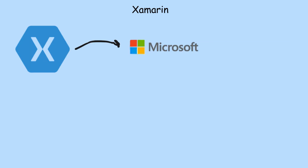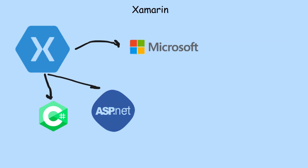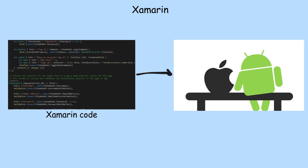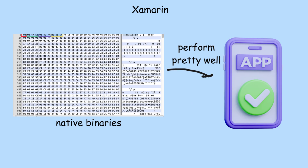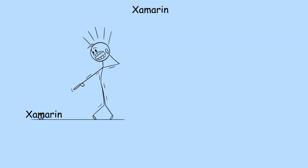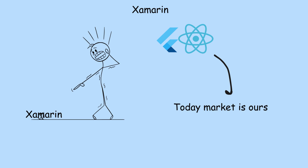Xamarin. Made by Microsoft, Xamarin uses C# and .NET to build mobile apps. It's a great fit if you're already working in the Microsoft ecosystem. You can share code between Android and iOS, and it compiles down to native binaries, meaning the apps perform pretty well. Many enterprise-level companies still use it because it's stable and well-supported. However, it's not as trendy today — Flutter and React Native have kind of taken the spotlight, especially for startups and new projects.